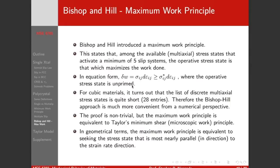Now what Bishop and Hill did was a really clever thing. They found out that they could enumerate every possible stress state in a polycrystal. It turns out there are only 28 of them. So this list of multi-axial stress states is actually pretty small. For Taylor, we had to look at 96 possible combinations and there wasn't any guarantee that our solution was unique. For Bishop and Hill, we only have to look through 28, and we know our solution is unique.